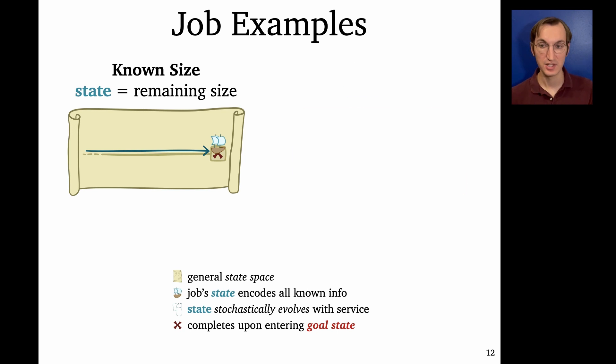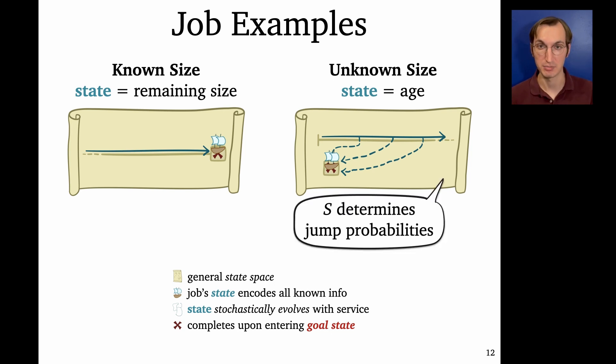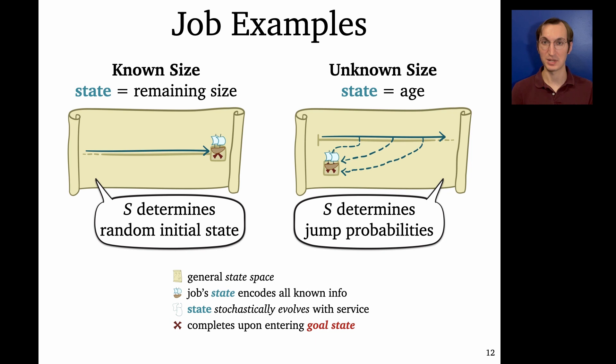Okay, what about unknown size? So when we have unknown sizes, then basically the only thing we know about a job is its age. And the dynamics of when we serve a job, its age goes up, right? Because the age is the amount we've served it. But then at any moment in time, the job might complete, right? As soon as the age equals the size, we just don't know when that is. So the dynamics look like as we serve the job, its age increases at rate one until it suddenly, unexpectedly, jumps to the goal state. And these jump probabilities at each age are going to be determined by the size distribution. And if you're wondering how the size distribution comes into play in the known size world, there the size distribution determines the random initial state of the job.